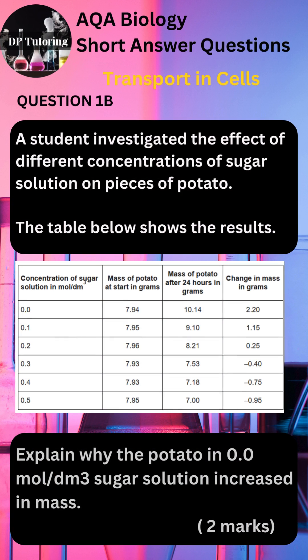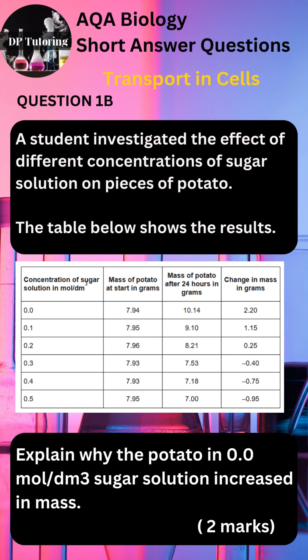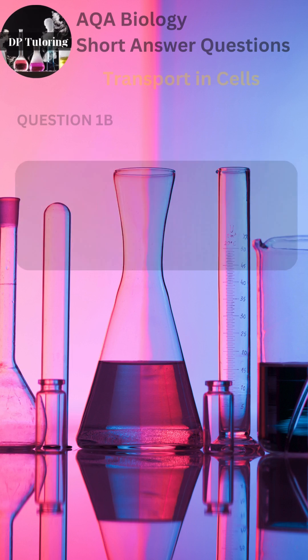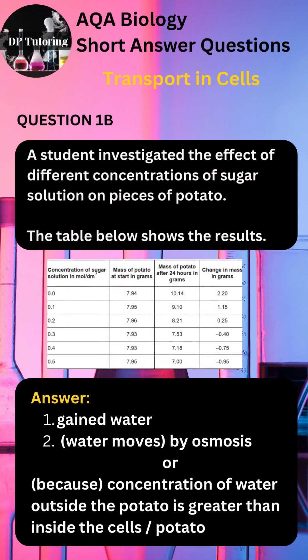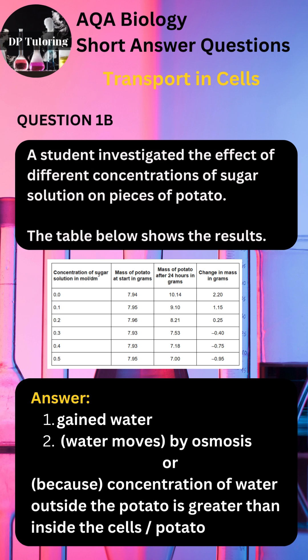The next part of the question asks you to explain why the potato in 0.0 moles per decimetre cubed sugar solution increased in mass. Pause the video and observe the change in mass in the grams column. The accepted answers are: 1. The mass change is due to the potato gaining water. 2. By the process of osmosis. You also need to state that the water concentration outside the cell was greater than inside the cell, so water moved inwards, causing the mass to increase.